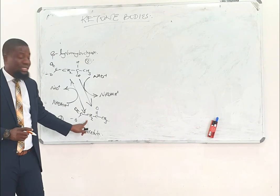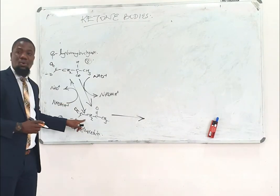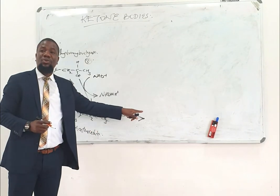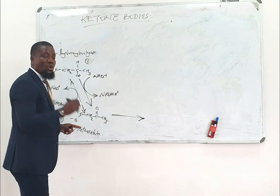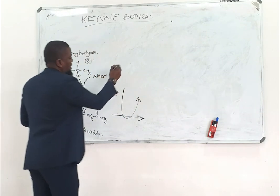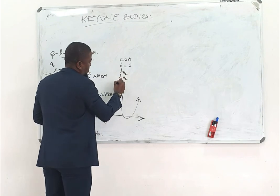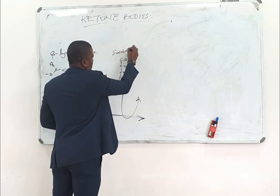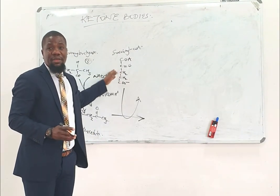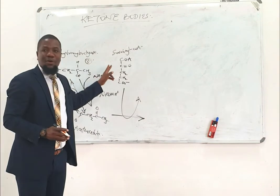Once you have acetoacetate, it is then going to be converted into acetyl-CoA. It is going to receive a CoA to form acetoacetyl-CoA. The CoA is going to come from succinyl-CoA. This succinyl-CoA can have two sources: one source is the TCA cycle itself, and the other source could be from beta-oxidation of fatty acids with an odd number of carbons.